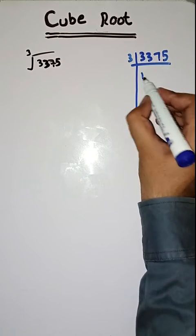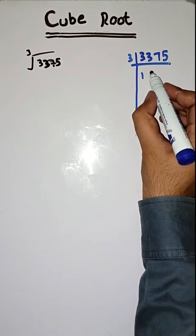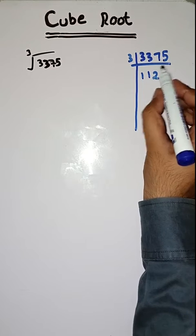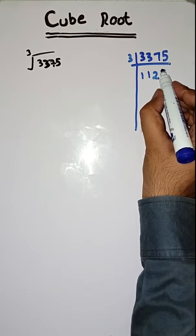We start with 3. 3 times 1 is 3. 3 times 2 is 6. 15 — 3 times 5 is 15.